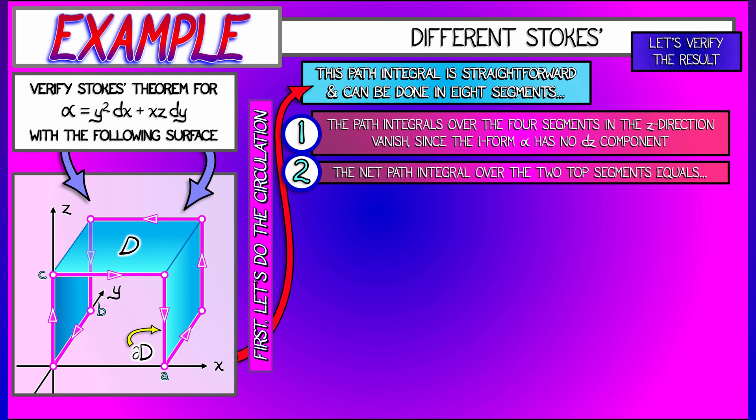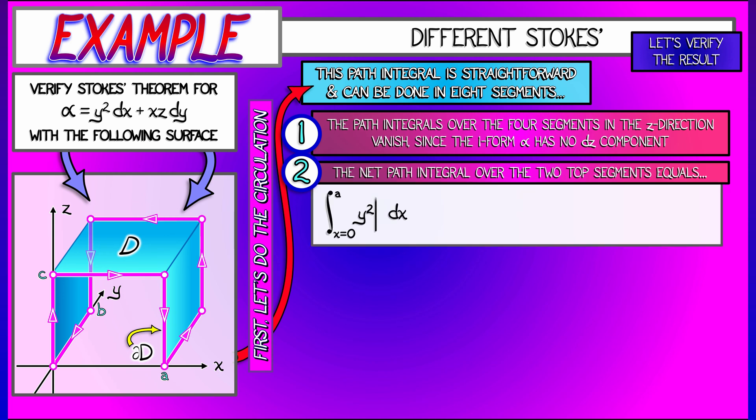Now, if I look at the top two segments, what is that going to be? Those move in the x direction. So I need to integrate y squared dx. The first of these has y equals zero and x going from zero to a. The second of these is where y is equal to b and x goes from a to zero. Notice how I'm encoding the orientation in the way that I do those integrals.